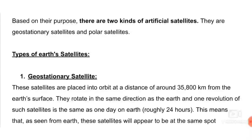Geo means earth, and stationary means constant or stable — the overall satellite appears stable from earth, fixed at one position. Geostationary satellites are placed in orbit at a distance of around 35,800 km from the earth's surface. They rotate in the same direction as the earth, and one revolution of such a satellite is the same as one day on earth.